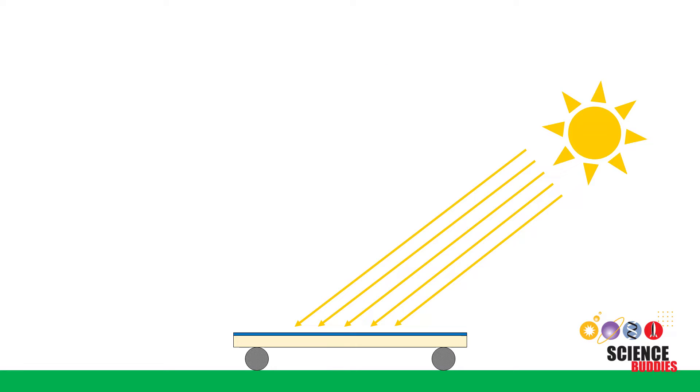However, if the sun is lower in the sky, then its rays will hit the solar panel at an angle. It will generate less power and therefore the car will go slower.